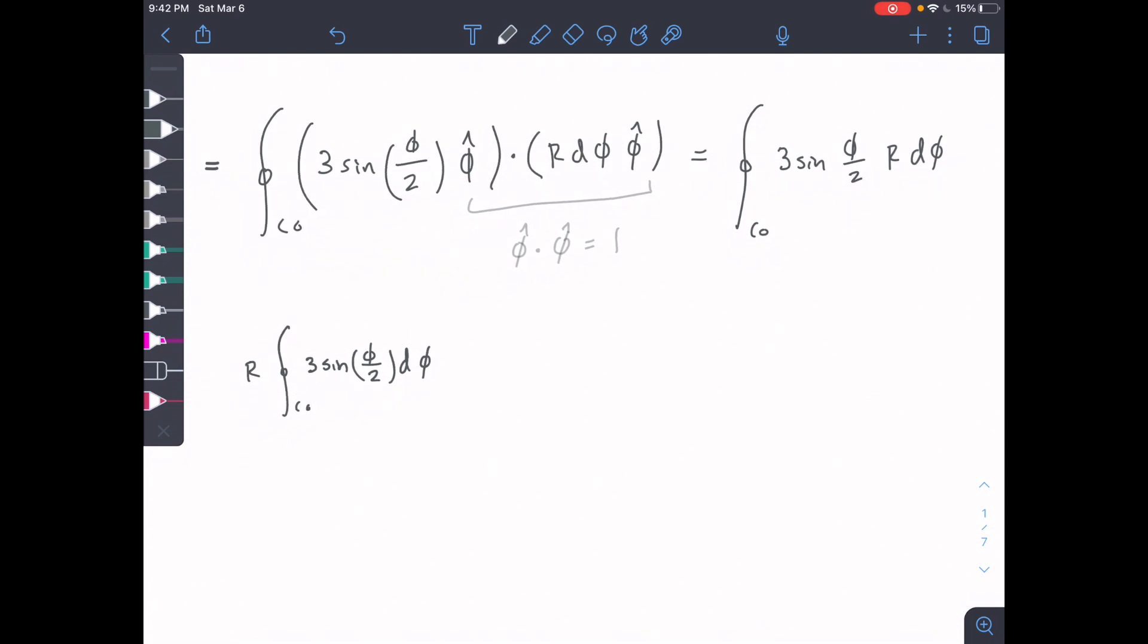Let's find our bounds for phi. We're also going to pull out the 3 and multiply it by R. We're going to have 3 times R, and R equals 4, so we can turn that into a constant. Then we have sine of phi over 2 d phi.